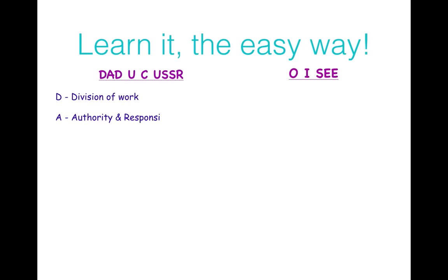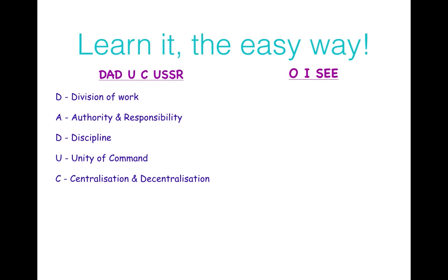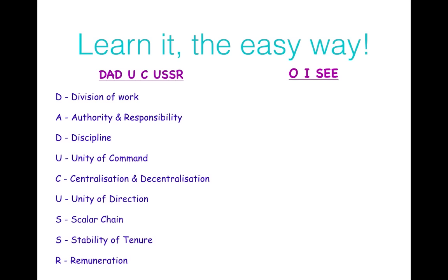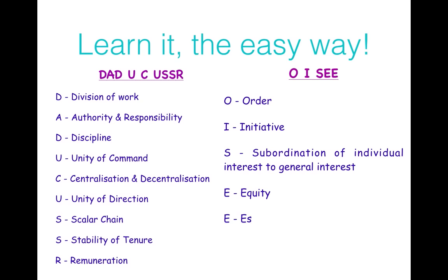D of 'Dad' stands for Division of Work. A stands for Authority and Responsibility. D stands for Discipline — that makes 'Dad.' U stands for Unity of Command. C stands for Centralization and Decentralization. U stands for Unity of Direction. S stands for Scalar Chain. S stands for Stability of Tenure. R stands for Remuneration. O stands for Order. I stands for Initiative. S stands for Subordination of Individual Interest to General Interest. E stands for Equity. And the last E stands for Esprit de Corps. That makes the 14 principles of management: Dad, UC USSR, OIC.